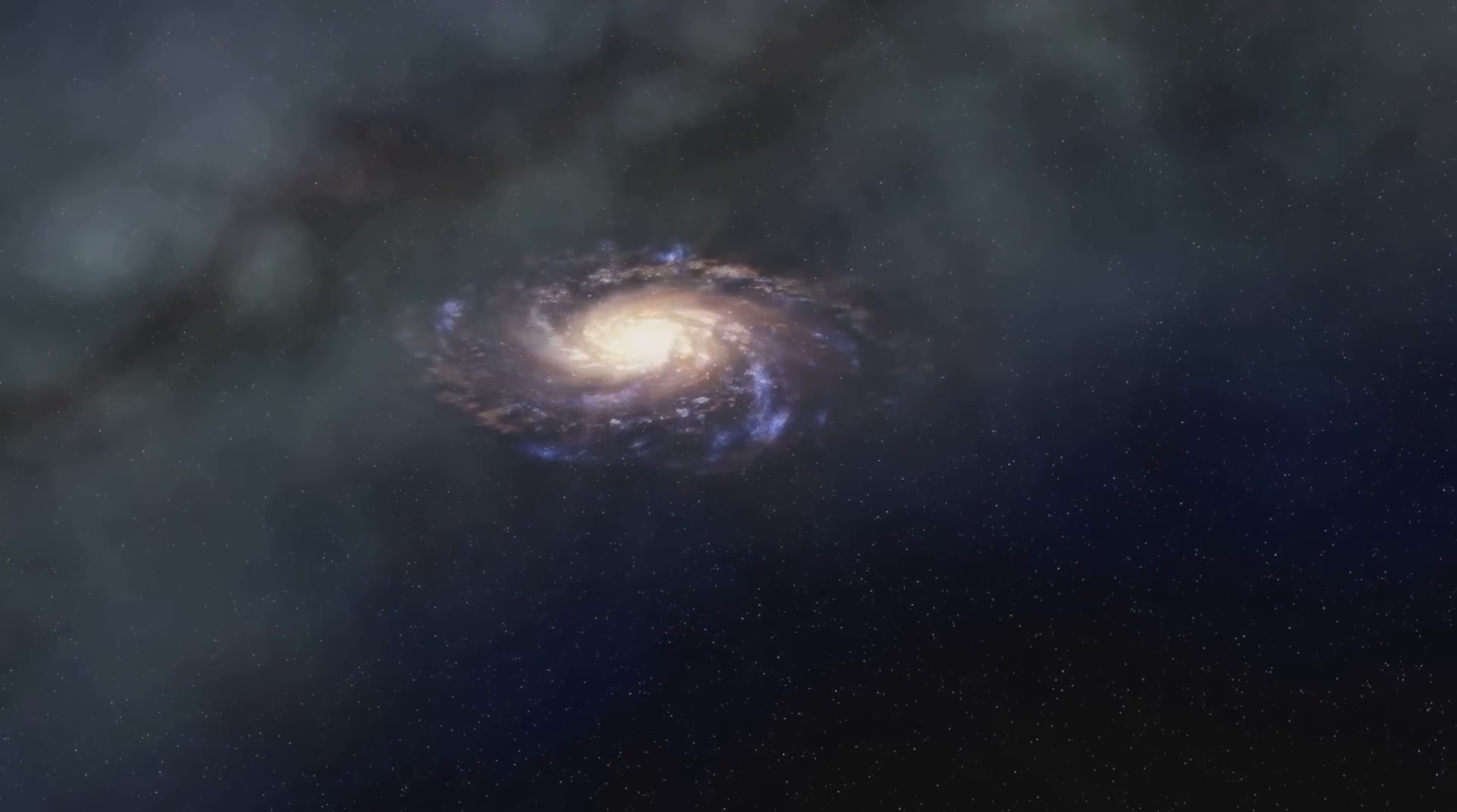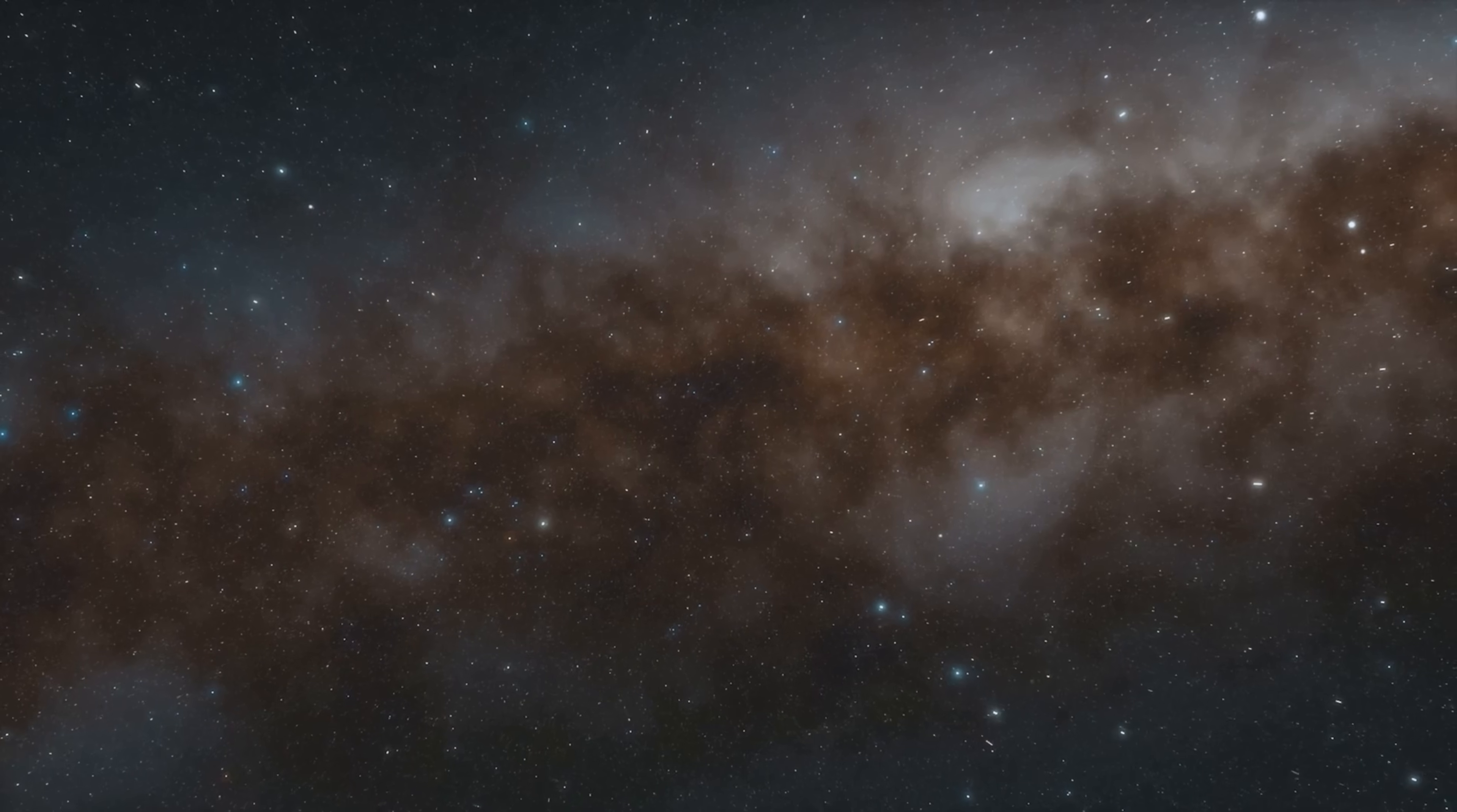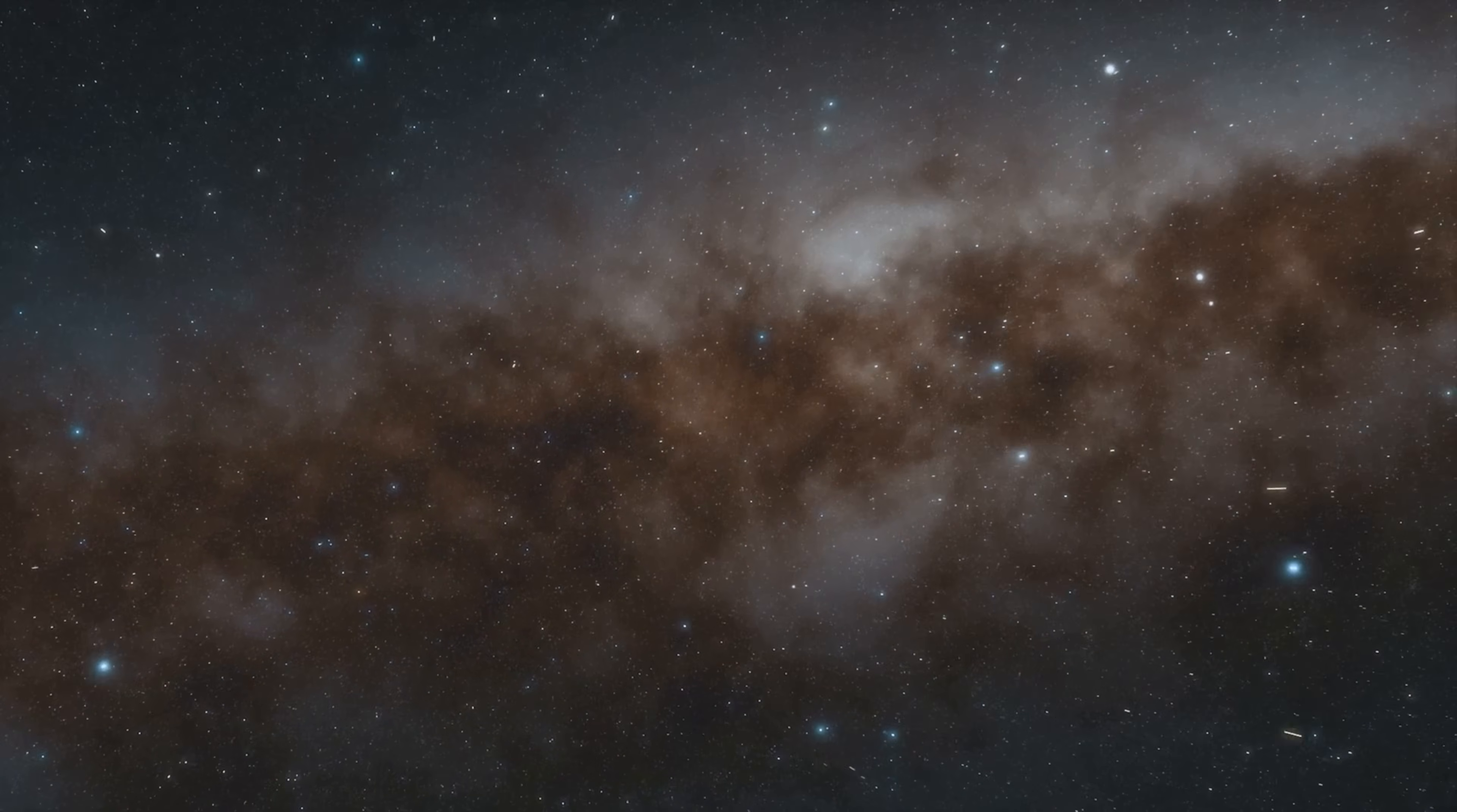Dark matter, on the other hand, is invisible and enigmatic. We can't see it directly, but we know it exists because of its gravitational effects on visible matter. Gravity is the force that holds all these components together, creating a balanced and stable system. Without gravity, galaxies would not be able to maintain their structure.